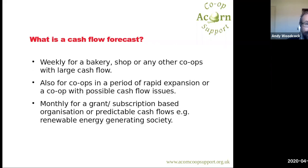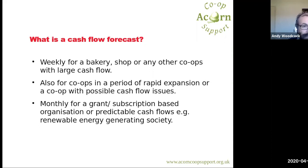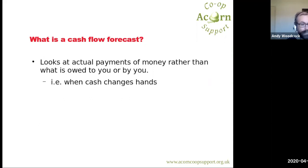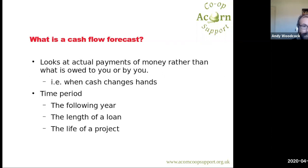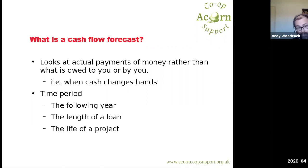However, if you're a grant- or subscription-based organisation, or you have predictable cash flows — for example, a renewable energy generating society — then you can get away with a monthly cash flow forecast. A cash flow forecast looks at the actual payments of money — when the cash changes hands — so it's not when you write an invoice, but when the invoice is paid. Traditionally, you do it for either the next year, for the length of a loan, or for the life of a project.